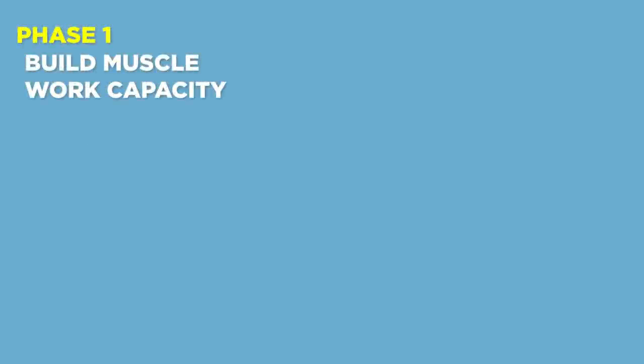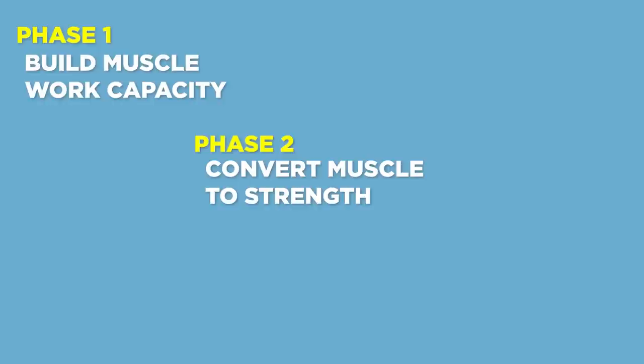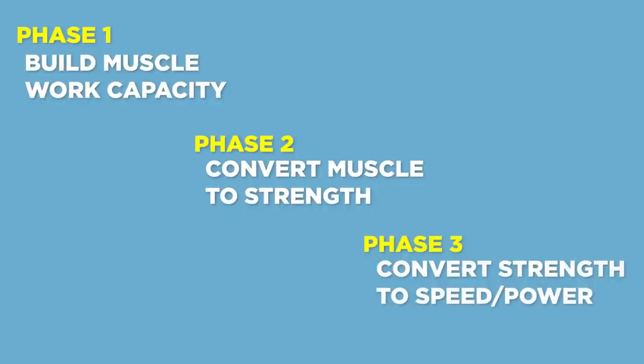Let's quickly recap the formula. Phase 1: build muscle and work capacity. Phase 2: use that muscle to build strength. Strength is very important because to produce high levels of power, we need to produce force at higher levels of our muscle's ability — and we can't build too much strength after a certain point if we don't first build muscle. Phase 3: use that muscle and strength to be faster by specifically training it from the general capacities you've just developed.